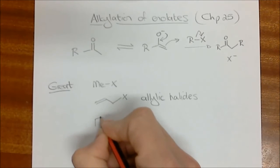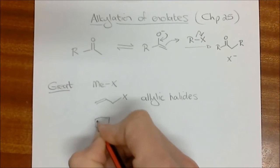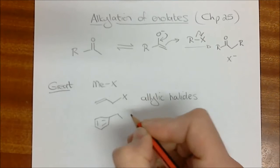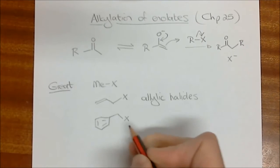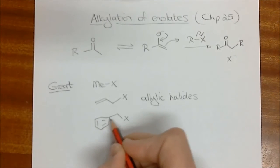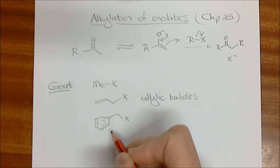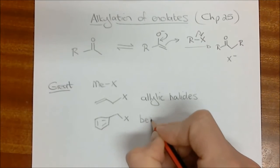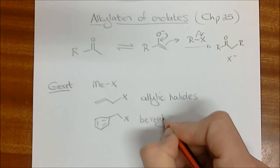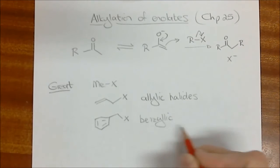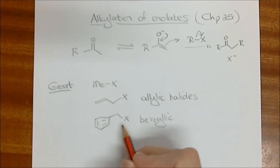And very similar to this are the benzylic electrophiles. So it's almost exactly the same. We have the double bond, but it's now part of an aromatic ring. This is benzylic. So that's the benzyl halides, benzyl chloride, benzyl bromide, things like that, absolutely excellent alkylating agents for these types of reactions.